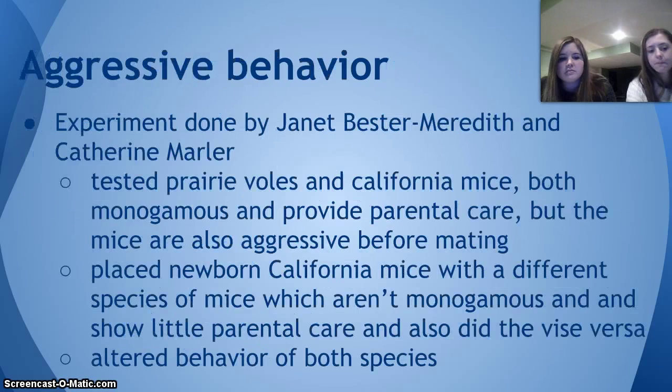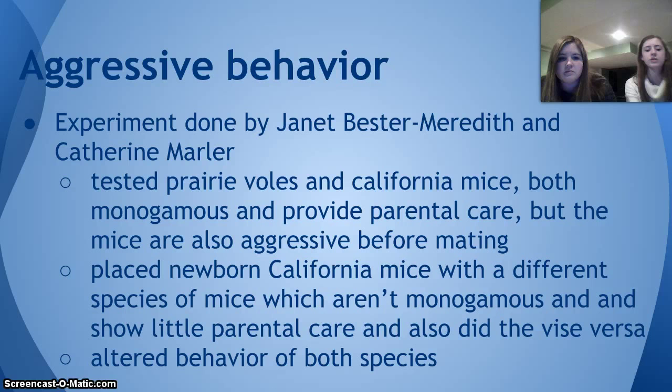In an experiment done by Janet Bester-Meredith and Catherine Marler, they tested aggressive behavior in prairie voles and California mice. Both were monogamous and provided parental care, but the mice were more aggressive for mating. They placed newborn California mice with a different species of mice that weren't monogamous and showed little parental care, and also did the vice versa. The ones that were less monogamous became more monogamous when placed with the different species.